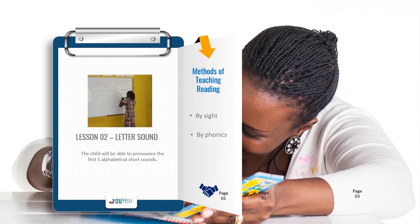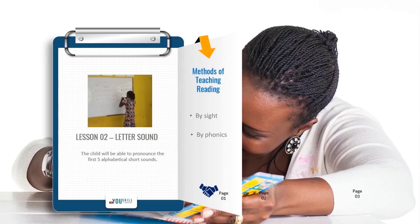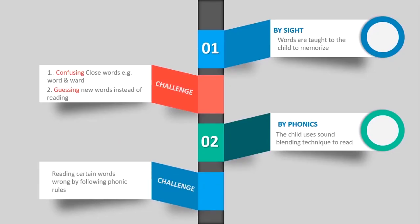Reading by phonics. This method is where the child is taught to decode words. When we say decode words, the child has been taught the relationship between letters and their sounds, and then the child is also taught blending skills. So the child has an ability to pronounce words using the letter-sound relationship and is able to blend the sounds of the letters to pronounce the word. With this type of reading, the child is equipped to pronounce new words that he or she has not come across before by blending the sounds. This is also good, just that sometimes the child will be pronouncing the word wrongly by following the phonic rules.